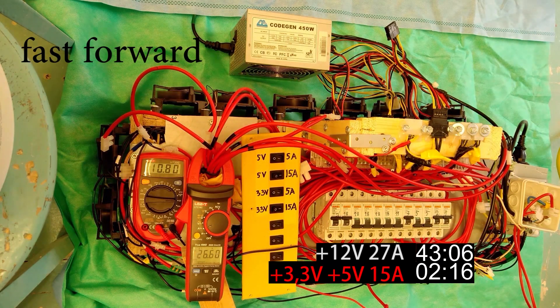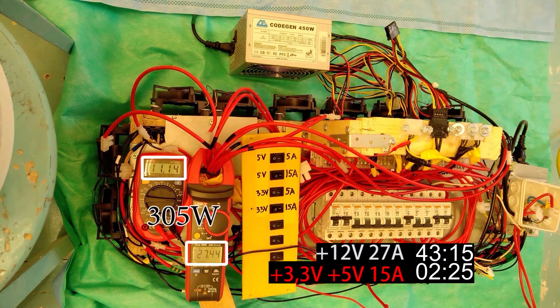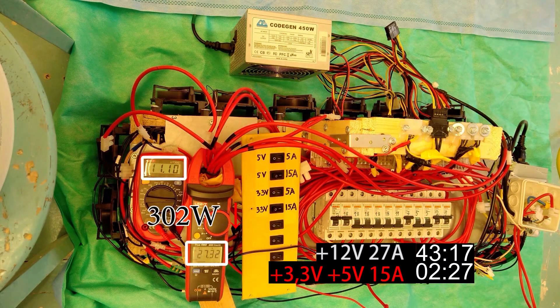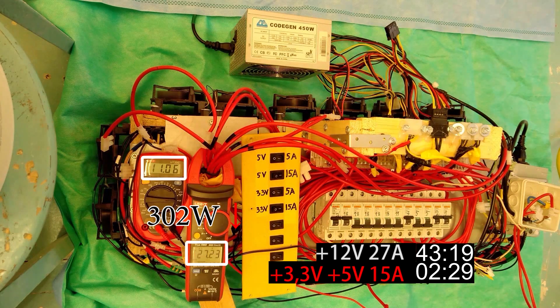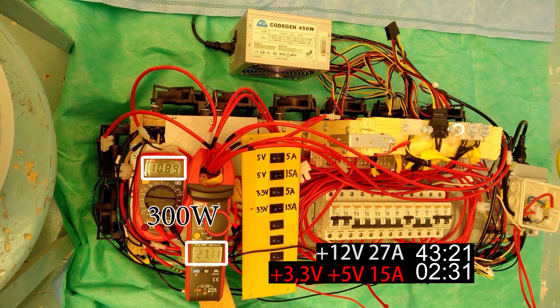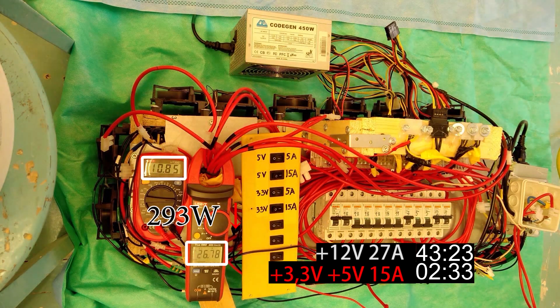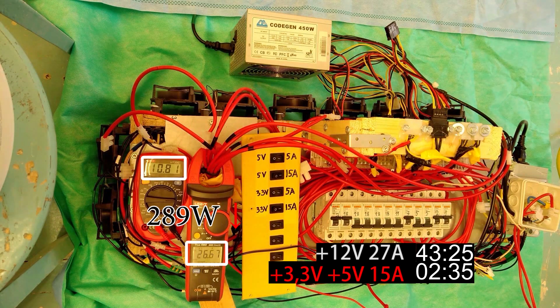After about two minutes I'm rushing to activate my emergency ventilation outlet because of the horrible smell emanating from the unit. The 12 volt rail voltage and current throughput suddenly drop and we reach a point of failure.